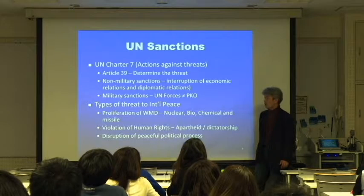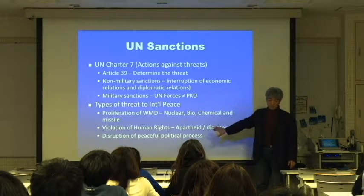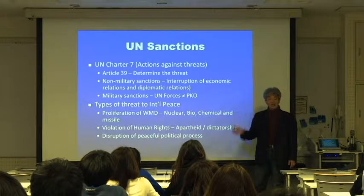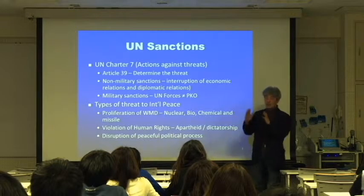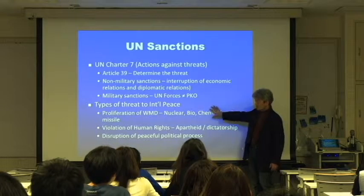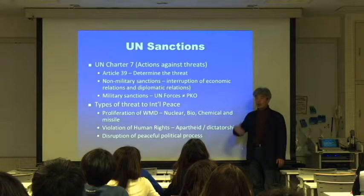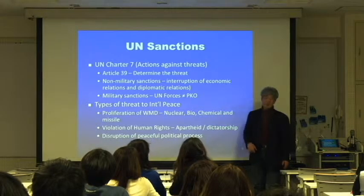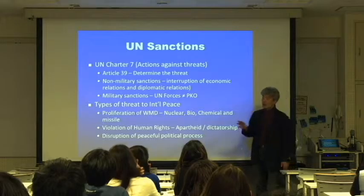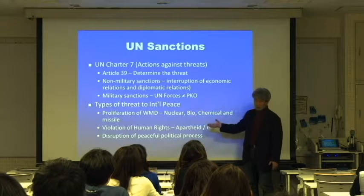What kinds of threats to international peace and security? There are 15 UN sanctions currently in place. One is on the DPRK, another is on Al-Qaeda and Taliban, including some ISIS elements. There are also 12 or 13 sanctions regimes on Congo, Somalia, Yemen, and Syria. So there are a variety of sanctions in place.